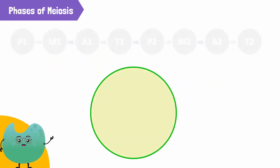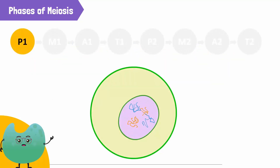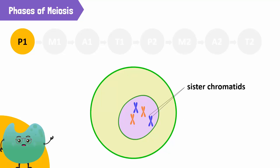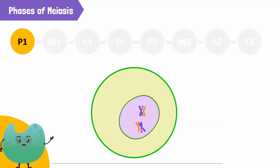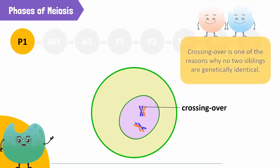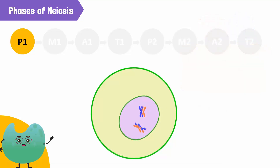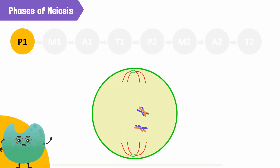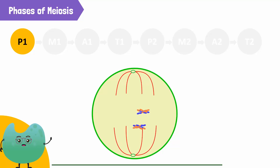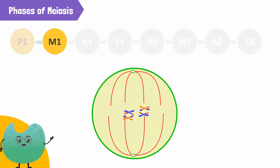Meiosis I begins with prophase I. In prophase I, the chromosomes condense into X-shaped structures that can be easily seen under a microscope. Each chromosome consists of two sister chromatids containing identical genetic information joined by a centromere. These sister chromatids then exchange chromosomal material — this process is called crossing over. After crossing over, the sister chromatids are no longer identical to one another. This is one of the reasons why no two siblings are genetically identical, unless they're twins. Then, the nuclear membrane disappears and the homologous pairs of chromosomes line up in the middle of the cell. The spindle fibers extend across the cell.